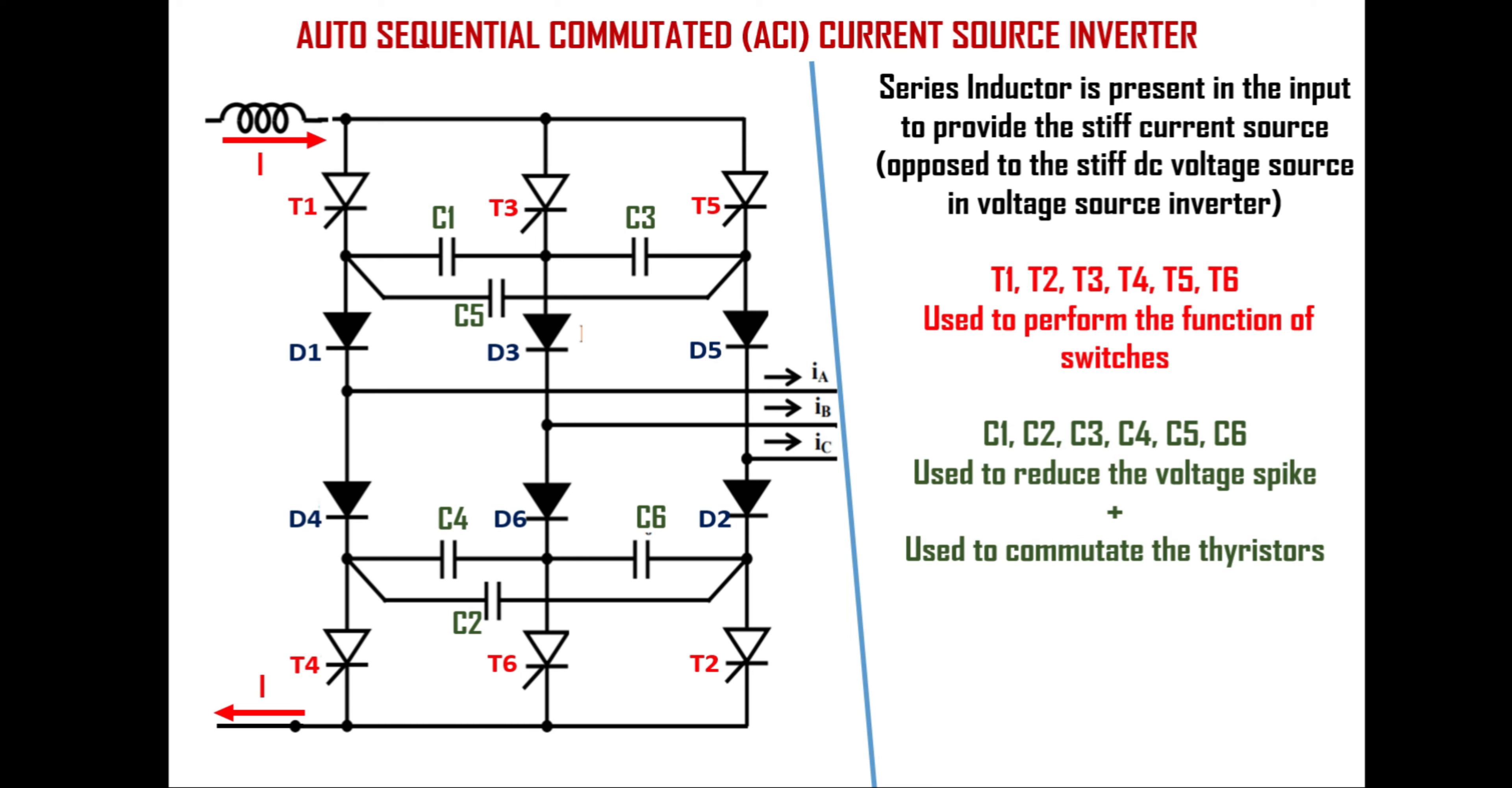Six capacitors are used for dual purpose. First it is used to reduce the voltage spikes during the transition of current and second it is used to reverse bias the thyristors, that is to commutate the thyristors. Six diodes are used to isolate the capacitors from load. Without these diodes charge in the capacitors would discharge through loads. So proper commutation may not happen.